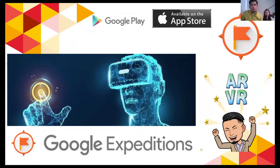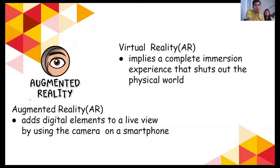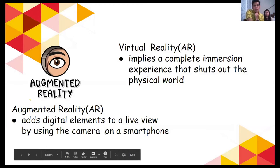The next app is Google Expeditions, which is all about AR and VR. It's downloadable from Google Play or the Apple Store. It adds digital elements to a live view using the camera on a smartphone. Have you played Pokémon Go? That's basically augmented reality — you can be in a court or somewhere and search for Pokémon appearing in the real environment through your camera.